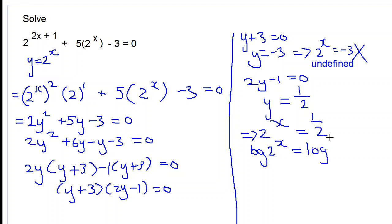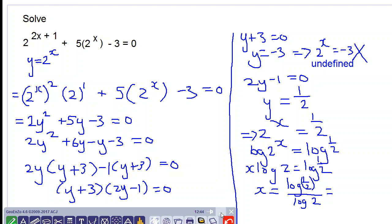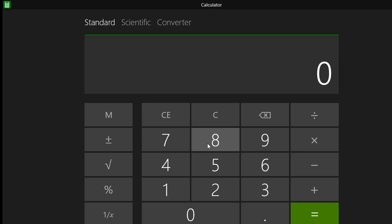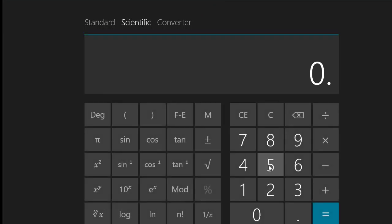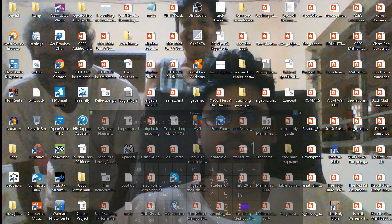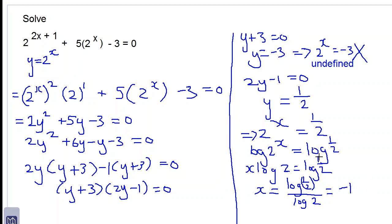So log of 2 to the x equal to log of 1 half. Use the power law now: x times log of 2 equals log of 1 half. Divide both sides by log of 2: x equals log of 1 half over log of 2. We have to work this out in our calculators: log of 1 half divided by log of 2, which is 0.5 log divided by 2 log, equals negative 1. So we get x is equal to negative 1, and that is our answer. Thanks for watching, have a good day.